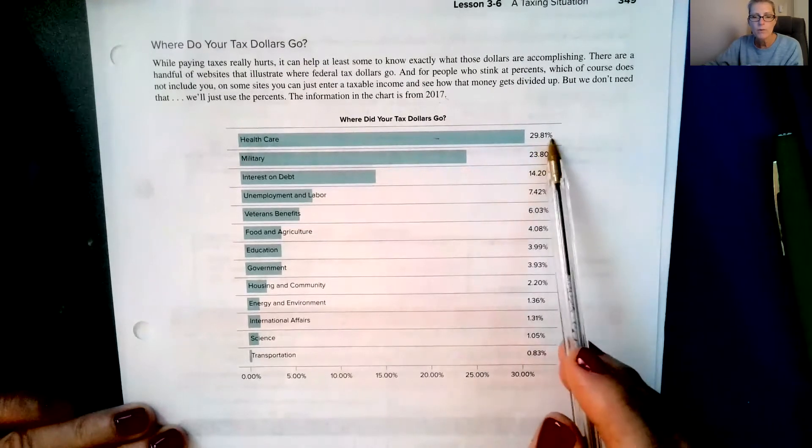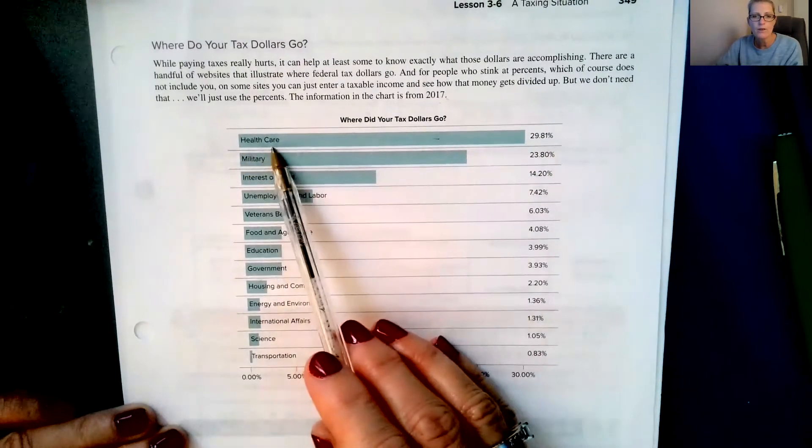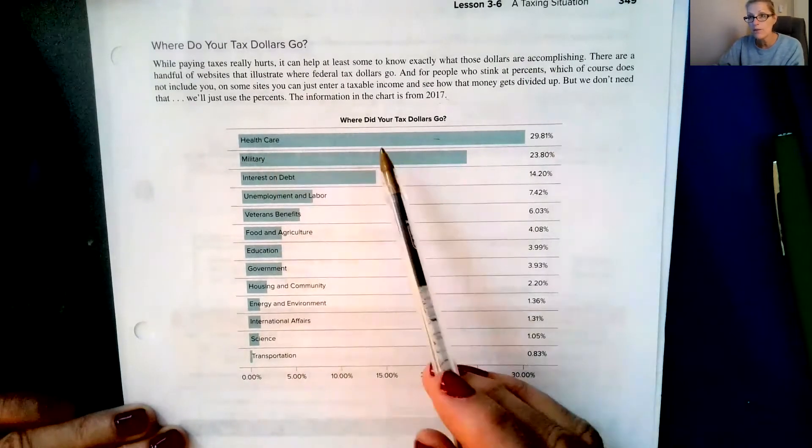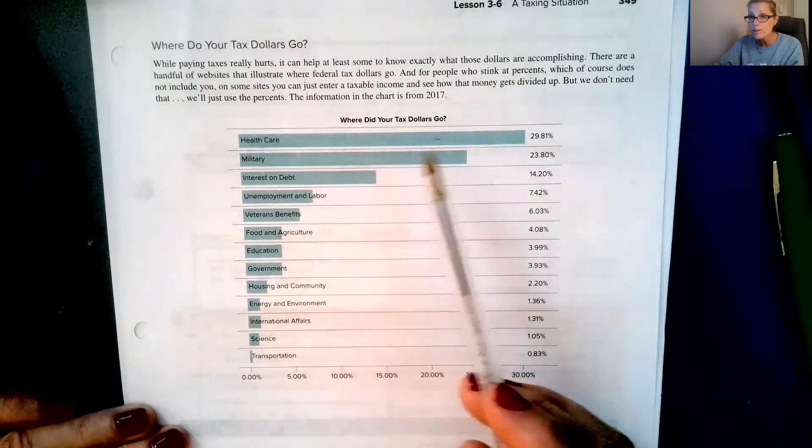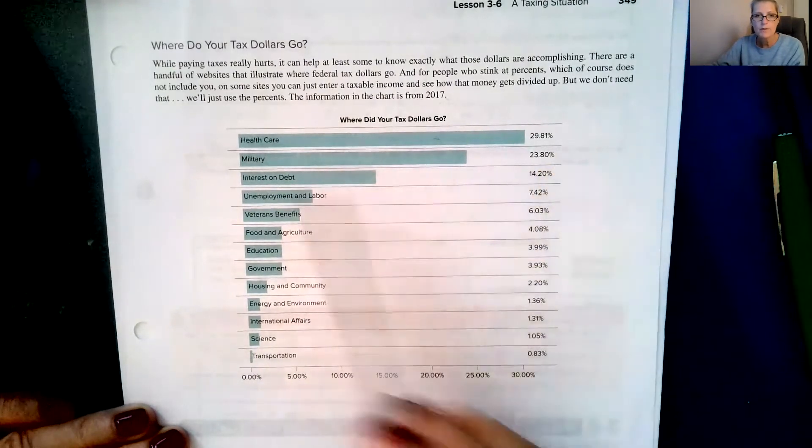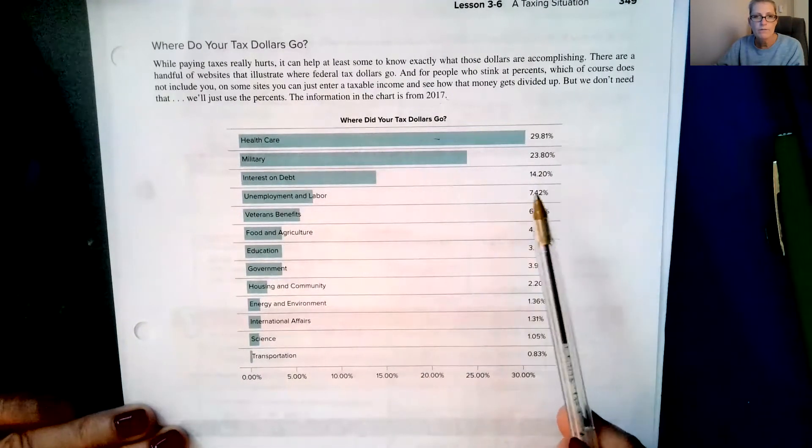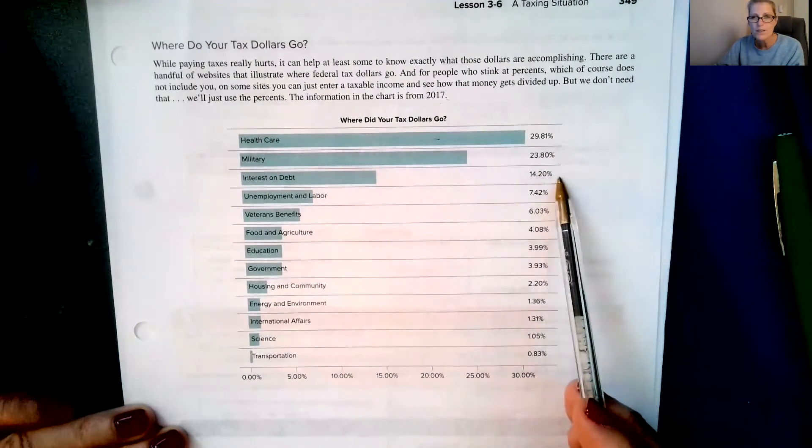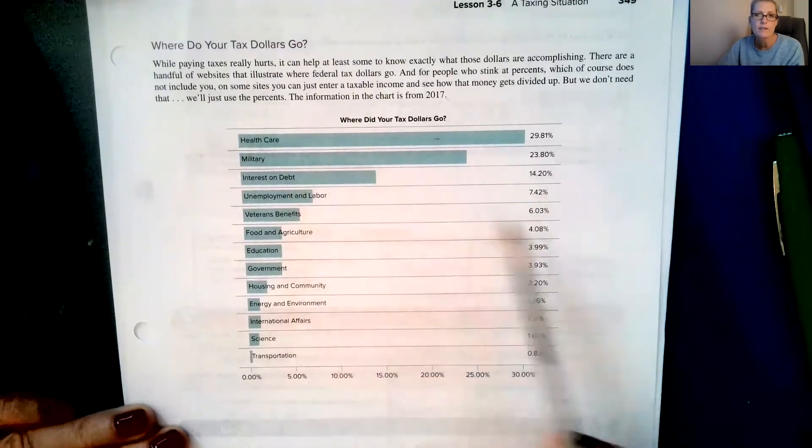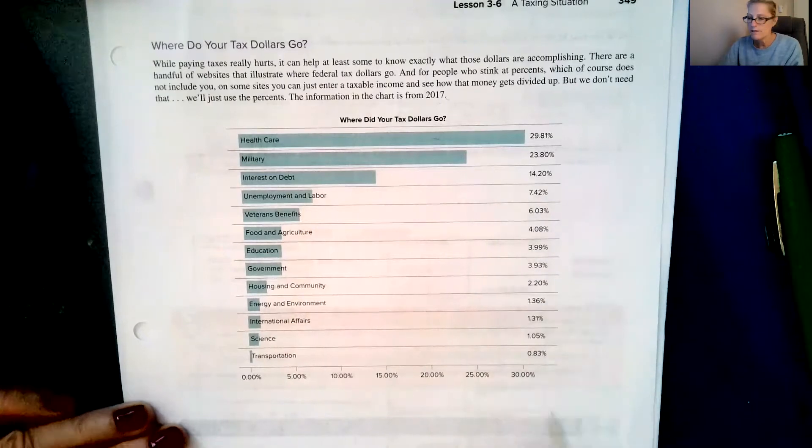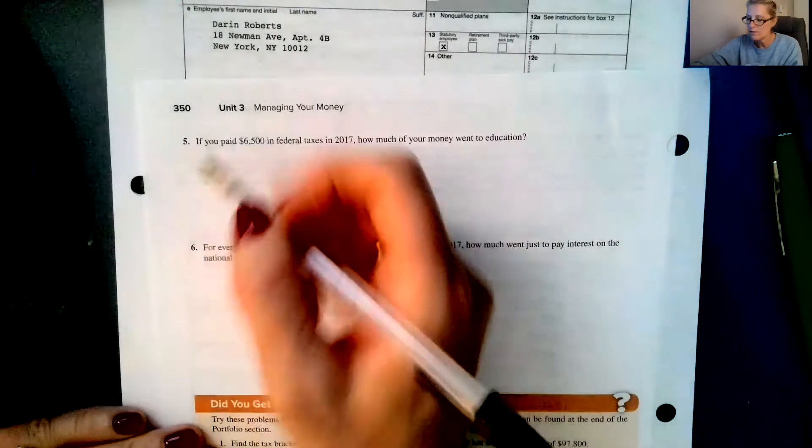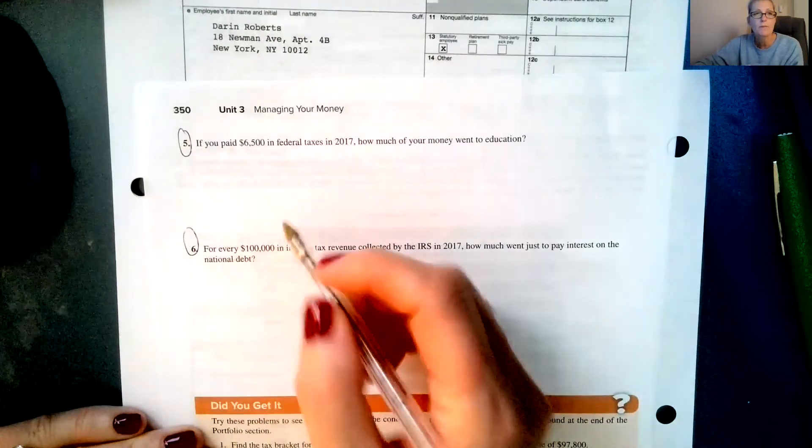So in 2017, 29.81% of your tax dollars were going to health care. Now I don't know what kind of health care, if that's public health care or if that's research for medicines. I'm not sure. 23.8% was going to military. 14.2% of your tax dollars are going to interest on the national debt. That's crazy. And so it's just listed there.